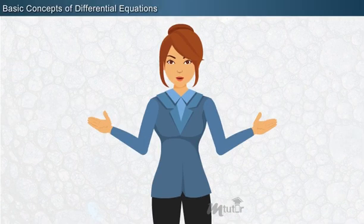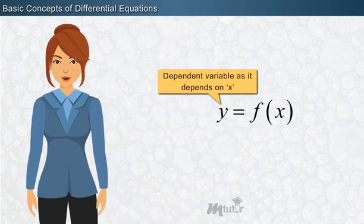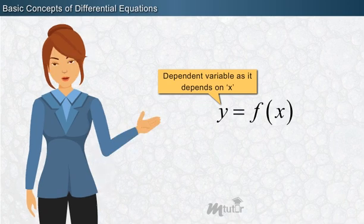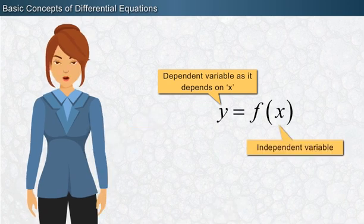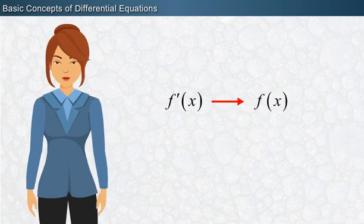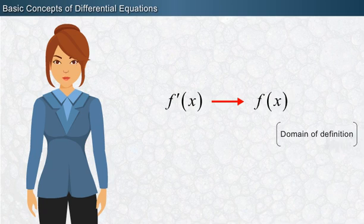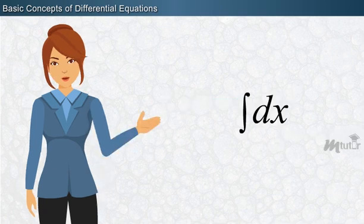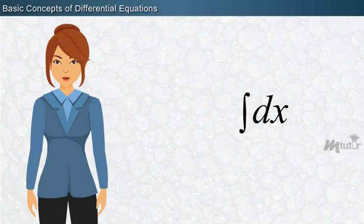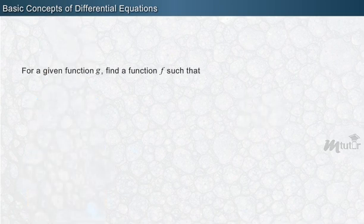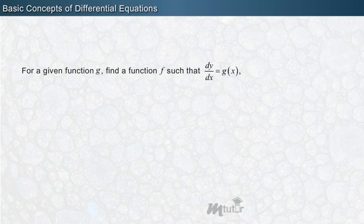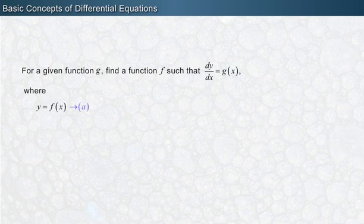In the previous classes, we discussed how to differentiate a given function f with respect to an independent variable — that is, how to find f'(x) for a given function f at each x in its domain of definition. Further, we also learned in integral calculus how to find a function f whose derivative is the function g. It can be formulated as: for a given function g, find a function f such that dy/dx equals g(x), where y equals f(x). Let us name it as equation (a).